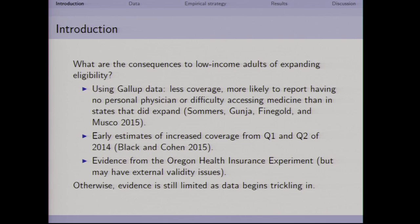There's already some evidence that's begun to trickle out, and I consider this paper part of that trickle. A recent paper in JAMA used Gallup data and found that states that did not expand Medicaid eligibility had less of a gain in health insurance coverage, and individuals were more likely to report having no personal physician or difficulty accessing medical care. There were also early estimates from the NHIS — the dataset I'm using — showing states that adopted Medicaid expansions saw greater gains in health insurance coverage among the low-income population.